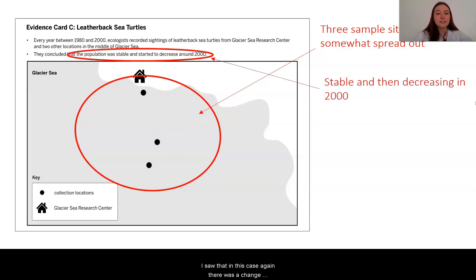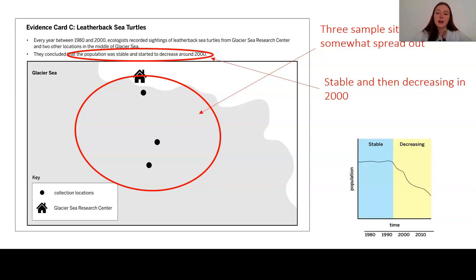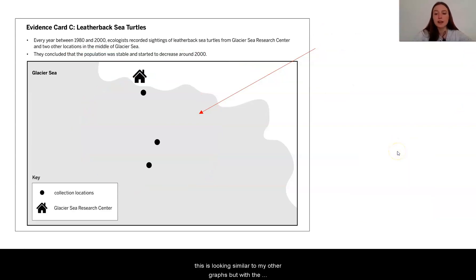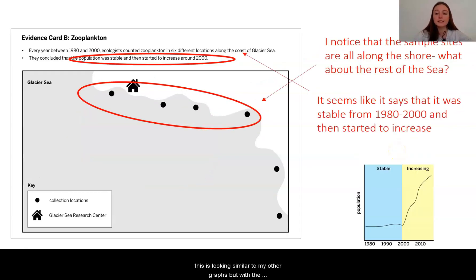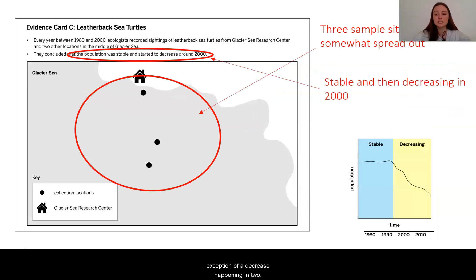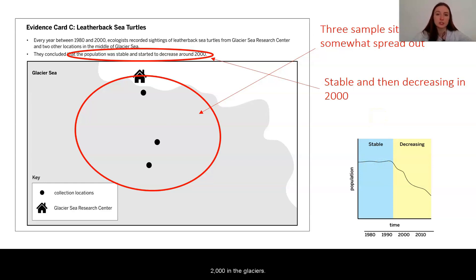In this case, there was a change happening around 2000, but this time the population was starting to decrease. I sketched a graph to think about this, and I'm noticing this is looking similar to my other graphs but with the exception of a decrease happening in 2000. It seems like a lot of changes were happening around 2000 in the glacier sea.